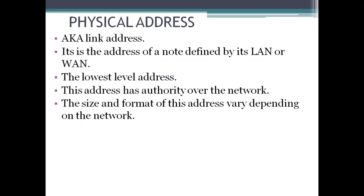Physical address, also known as link address, is the address of a node as defined by its LAN or WAN. It is included in the frame used by the data link layer — it is the lowest level address. The size and format of this address vary depending on the network. For example, Ethernet uses a 6-byte physical address imprinted on the network interface card, while LocalTalk has a 1-byte dynamic address that changes each time the station comes up.